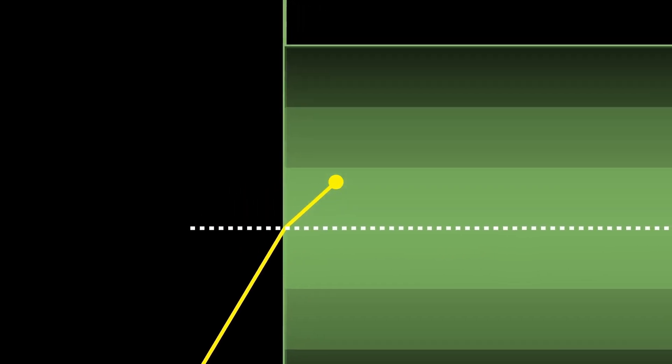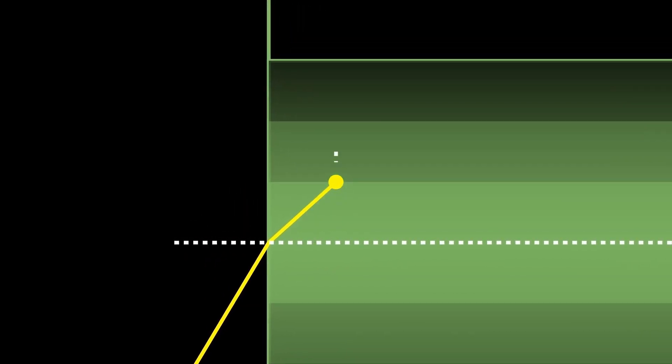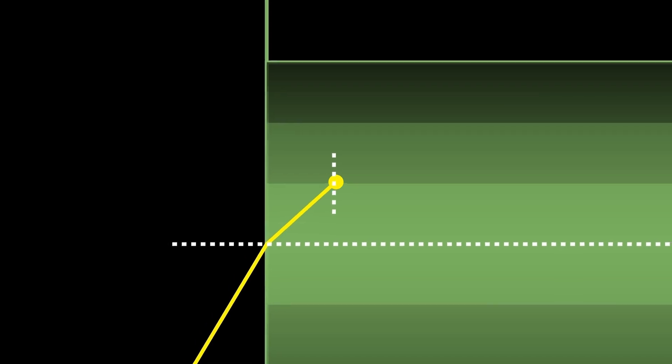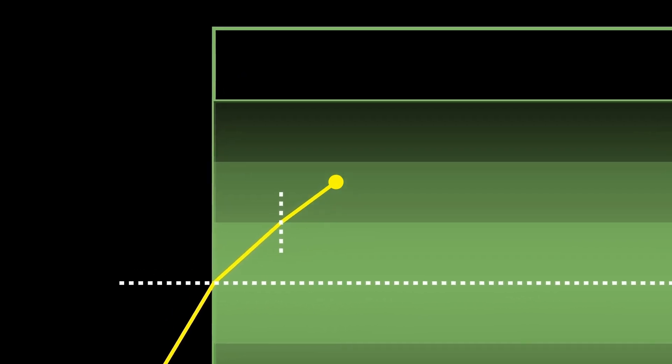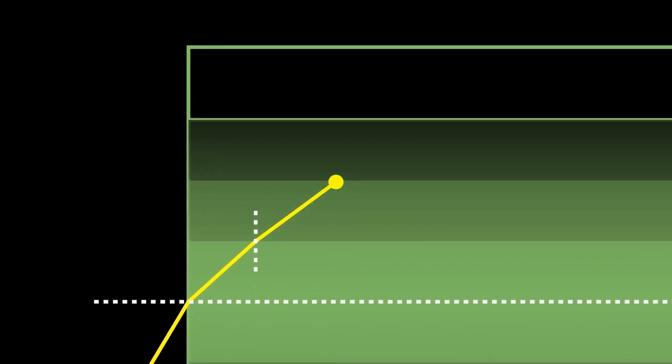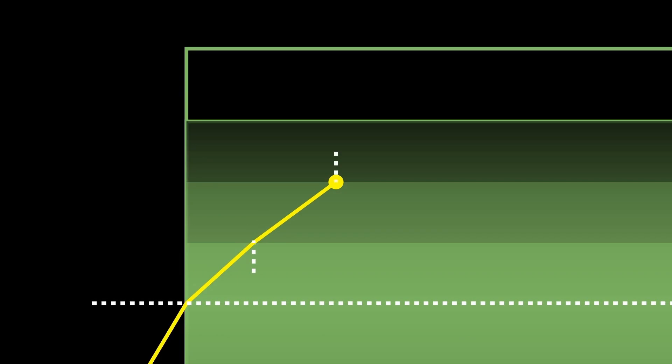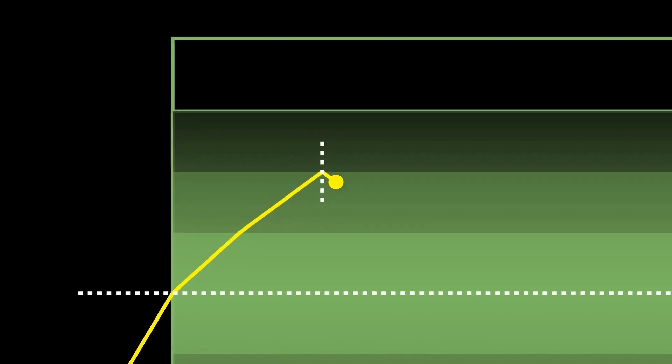We can simulate what light entering this cable would look like using basic applications of Snell's Law. First, when light reaches the air-cable boundary, it will bend toward the normal line, which in this case is also our central axis. Then, at the boundary between the first and second layer of the core, it will bend away from the normal, though keep in mind that the normal is now a vertical line.